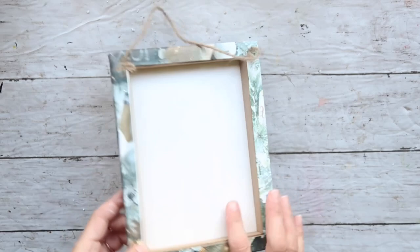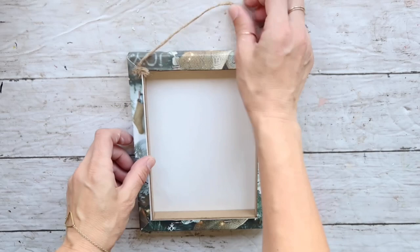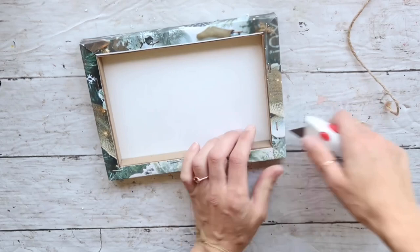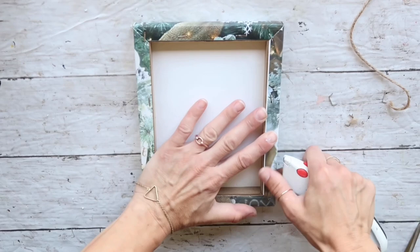For this project I'm going to be using this Dollar Tree canvas. I had this for a while and I am going to go ahead and take off the hanging part, jute twine, and then I'm going to gently pull out all the staples.